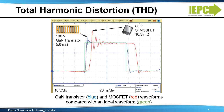Note how closely the eGaN transistor waveform matches the ideal waveform. The ratio of RMS voltage of all the harmonic frequencies divided by the RMS voltage of the fundamental frequency is the total harmonic distortion, or THD. Deviations from the ideal waveform are the primary cause of THD.